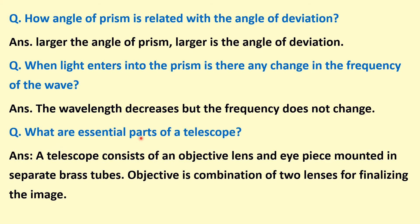What are the essential parts of a telescope? A telescope consists of an objective lens and an eyepiece mounted in separate tube sections. The objective is a combination of two lenses for forming the image.